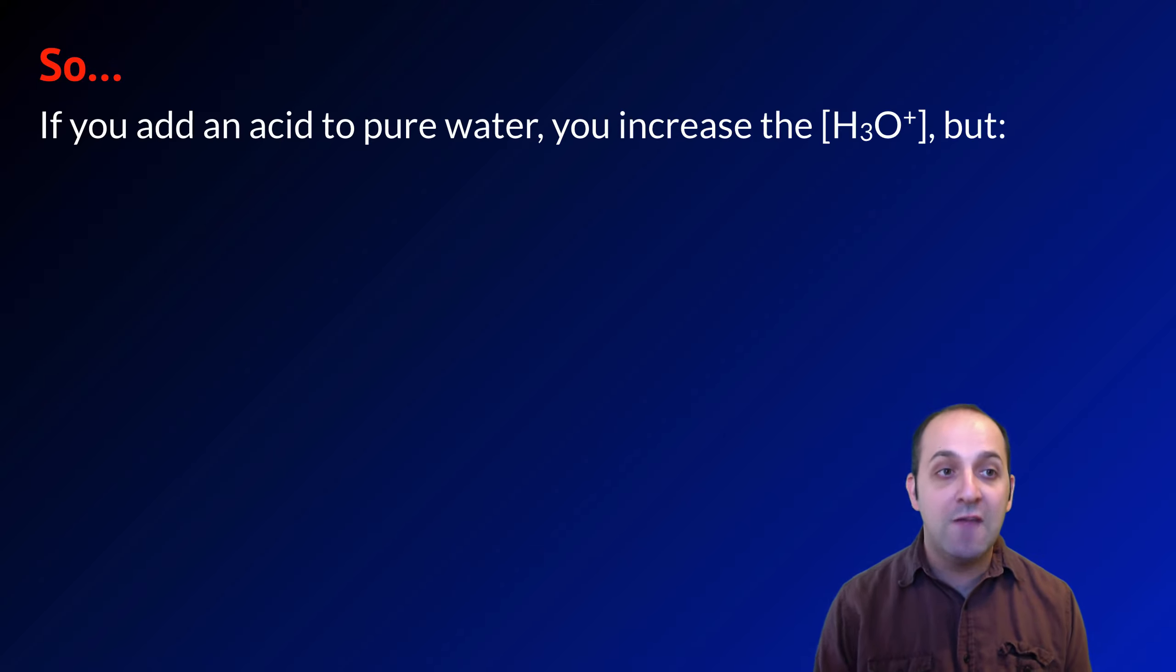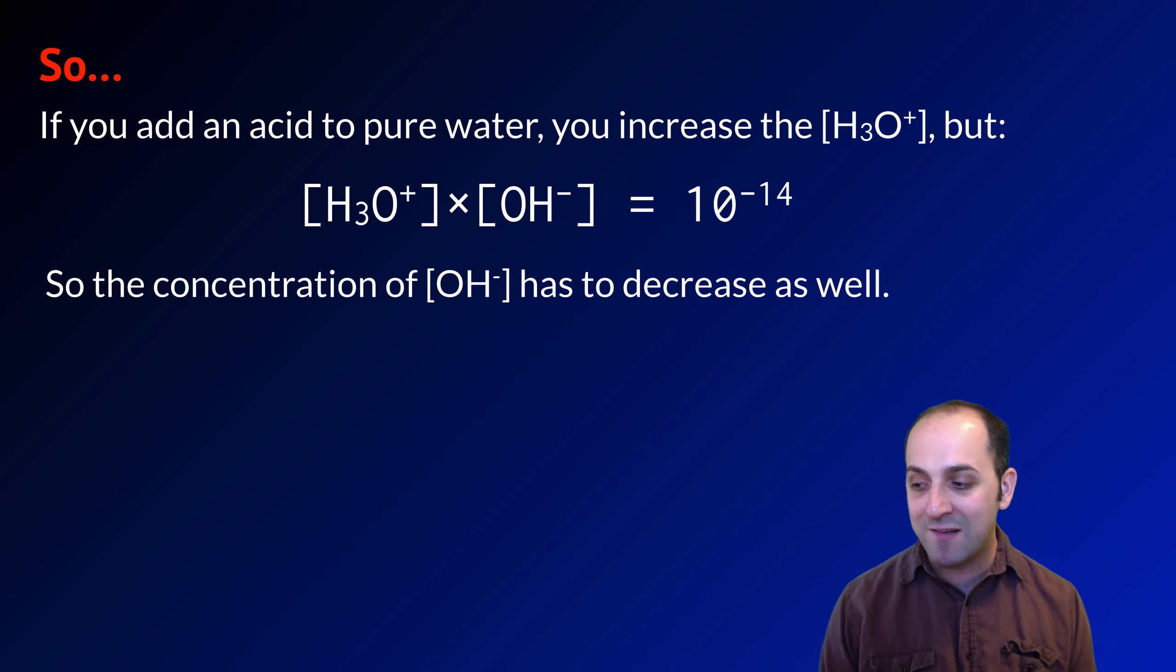So because H3O plus times OH minus, their concentrations, has to equal 10 to the negative 14, this has some interesting consequences. If you add an acid to pure water, you're increasing the concentration of H3O plus. But remember that that concentration of hydronium ions times the concentration of hydroxide ions has to equal Kw, 10 to the negative 14. As a result, if H3O plus concentration increases, OH minus concentration has to decrease as well.